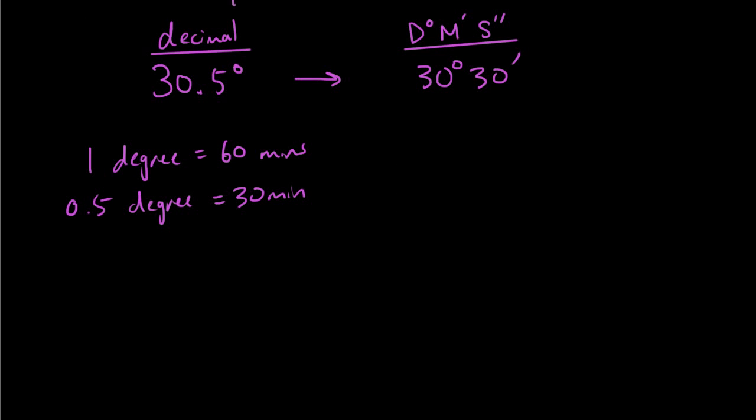Now if you want a better way of doing it, using let's say a formula, then it'll just be 0.5, which is the amount after the decimal point, times 60 because there are 60 minutes in one degree, is 30. So that number gives you the number of minutes.